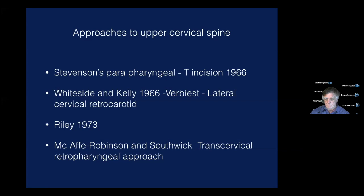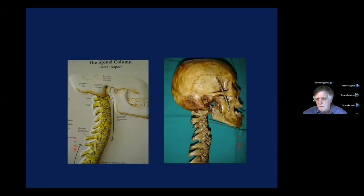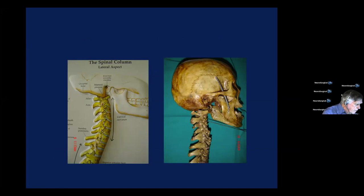As I told you last time, the deep cervical fascia has to be divided in such a way that we can reach the pre-vertebral region. In this picture, you can see the upper cervical spine coming more or less parallel to the mandible, the angle of the mandible. When the neck is extended and the mandible is moved away, you can reach the upper cervical spine easily.